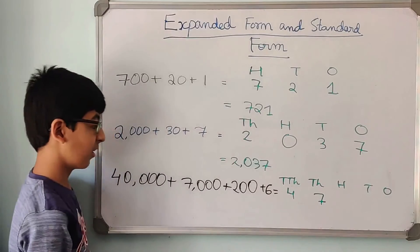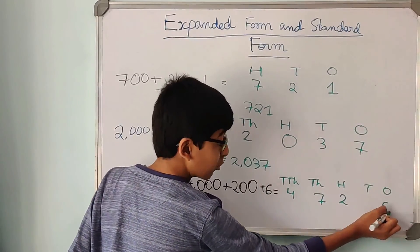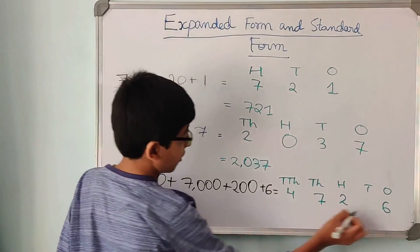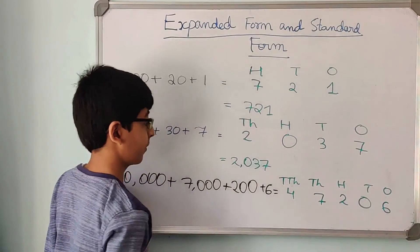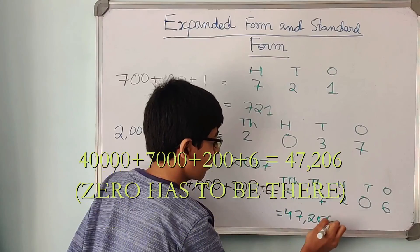7 would come in the thousands place, 2 would come in the hundreds place, and 6 would come in the ones place. So what would come in the tens place? 0. So now this is 47,206.